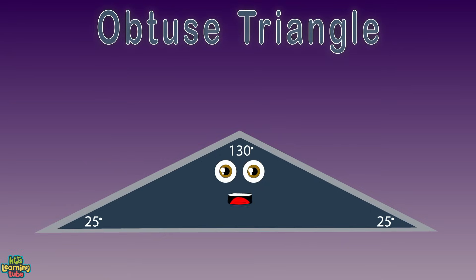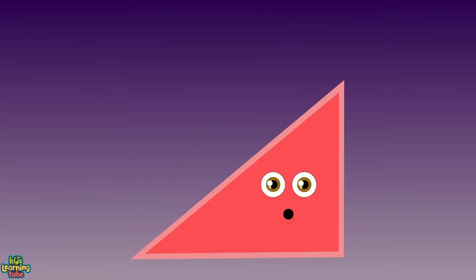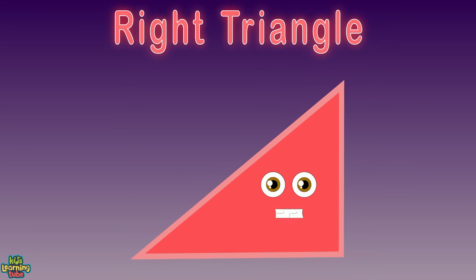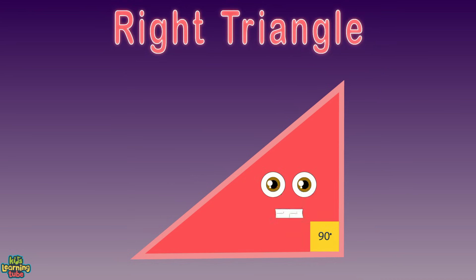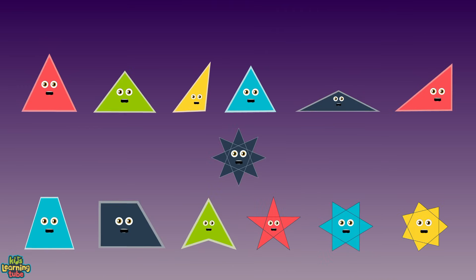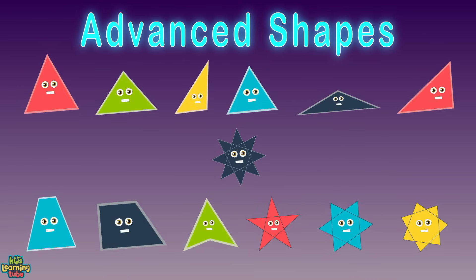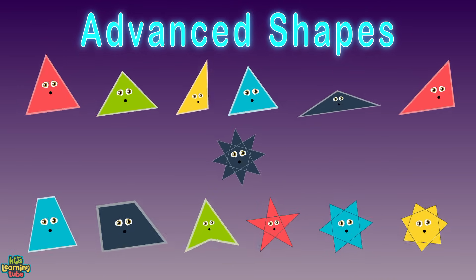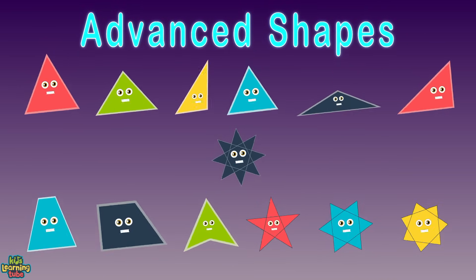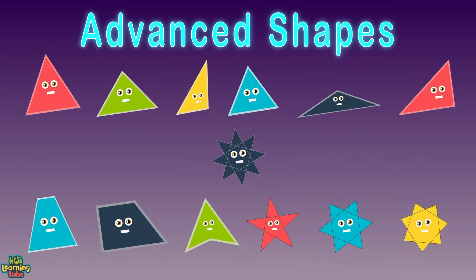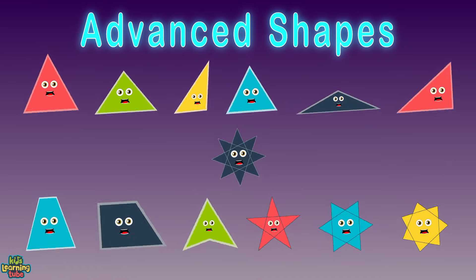...two acute angles. I look kind of mangled because I'm a right triangle. This means I'm a triangle in which one angle is a right angle.